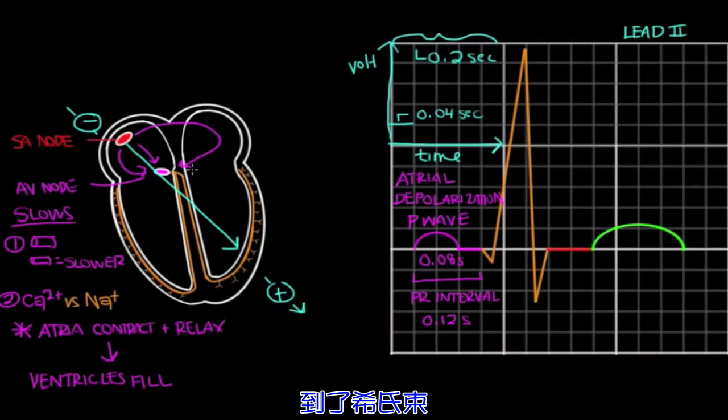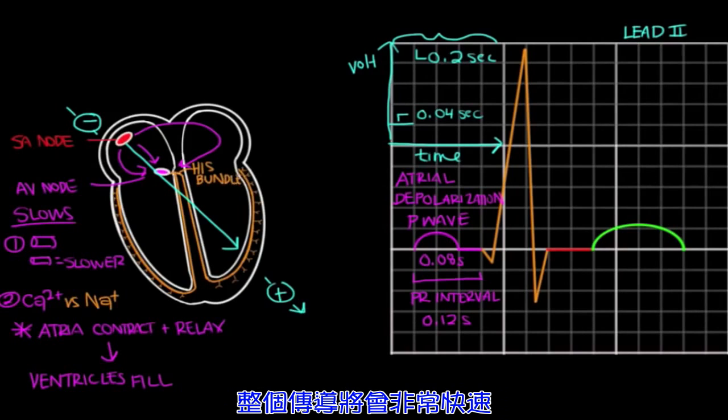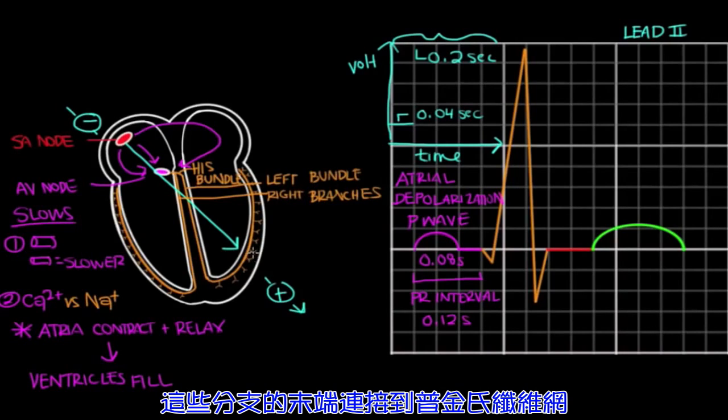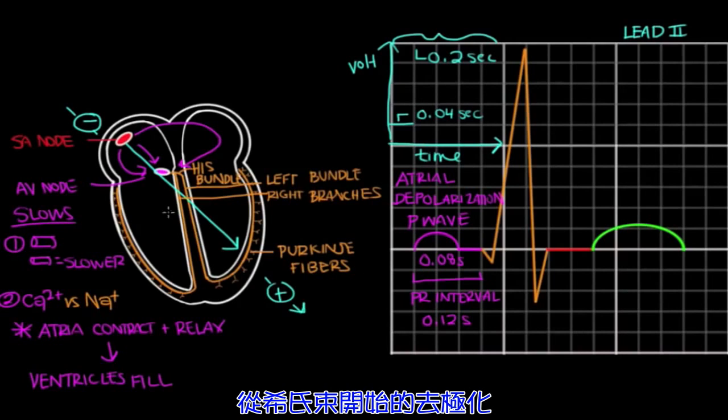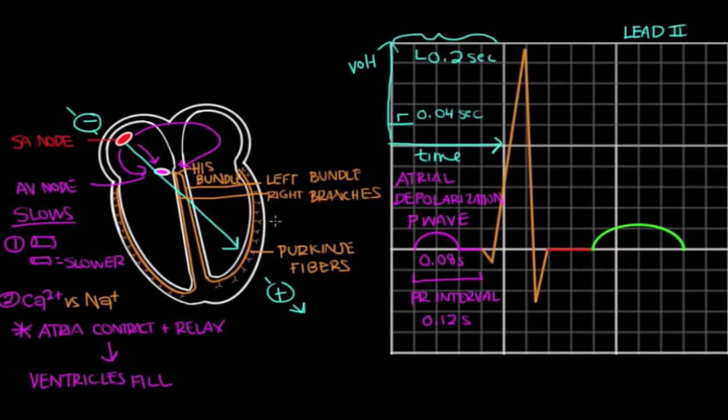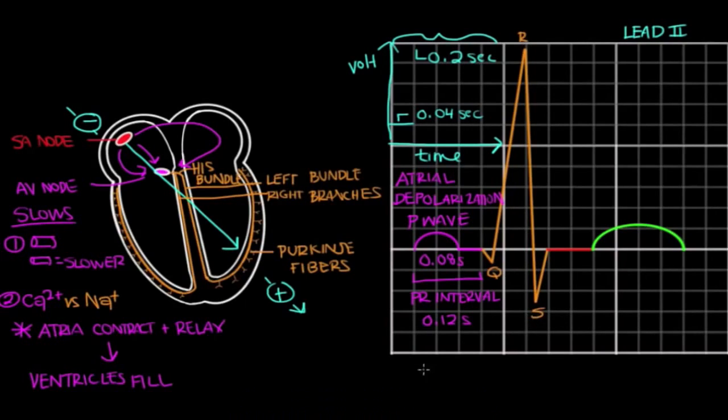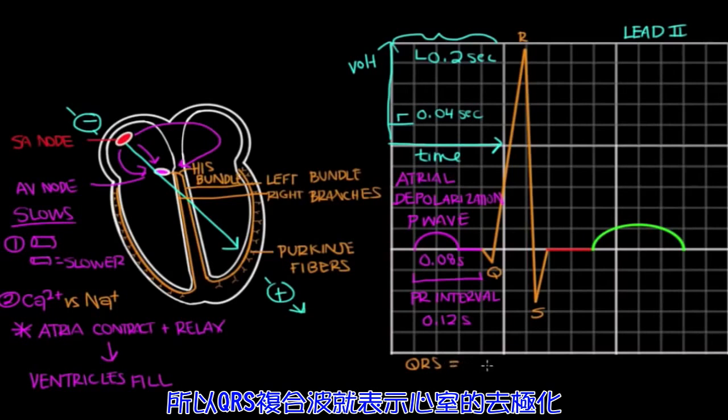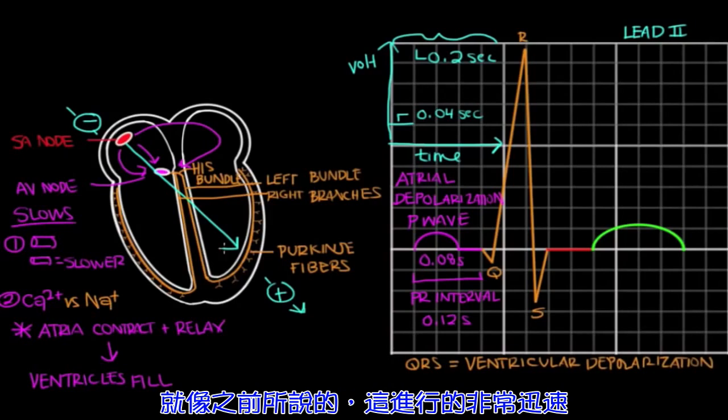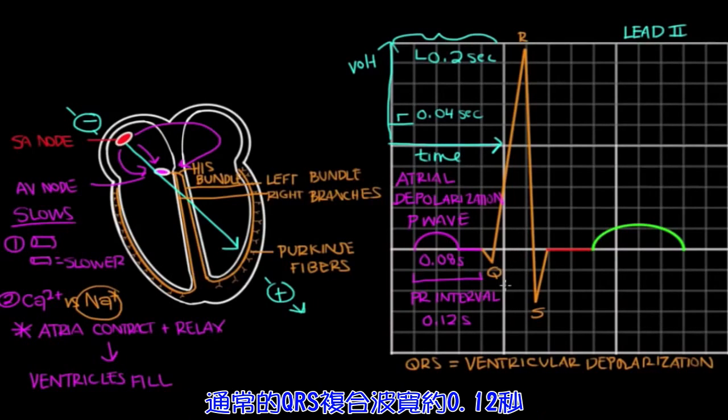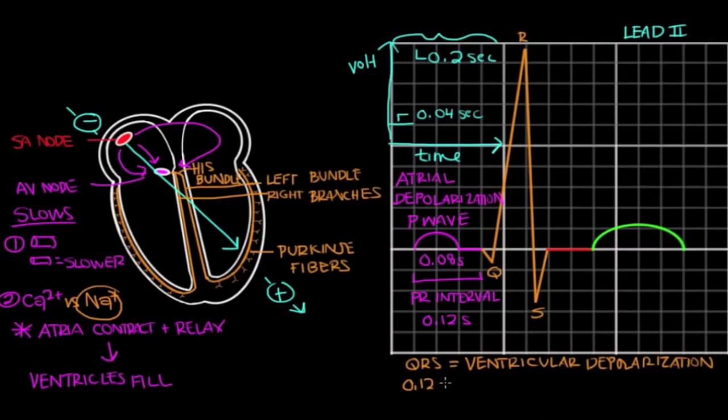The signal travels from the AV node to the HIS bundle. And once we hit the HIS bundle, this is where conduction starts moving rather quickly. The HIS bundle bifurcates into the left and right bundle branches. And these branches branch into terminal Purkinje fibers. The depolarization from the HIS bundle down the bundle branches into the Purkinje fibers leads to mass depolarization of ventricular cells. And it's seen as the QRS complex on EKG. Again, the QRS complex represents ventricular depolarization. And like we said before, this is very rapid because we're using fast-acting sodium channels now. So typically, the QRS complex is about 0.12 seconds. It shouldn't be any longer than that.